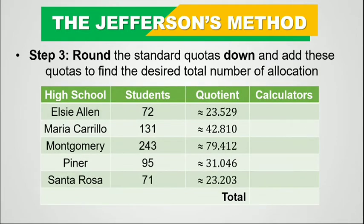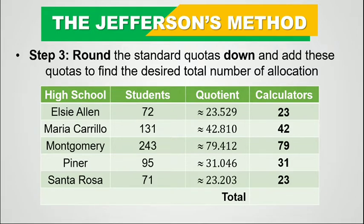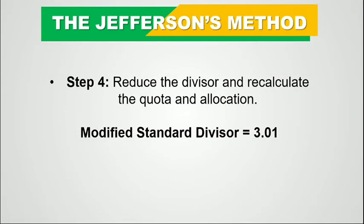Step 3: let's round the standard quotas down and add them to find the total. Elsie Allen: 23, Maria Carillo: 42, Montgomery: 79, Pinner: 31, Santa Rosa: 23. The total is 198. We still lack two calculators to be apportioned. Since the total desired number is not obtained, we will proceed to step 4, which is to reduce the standard divisor and recalculate the quota and allocation.